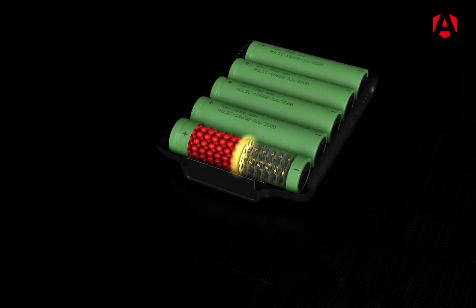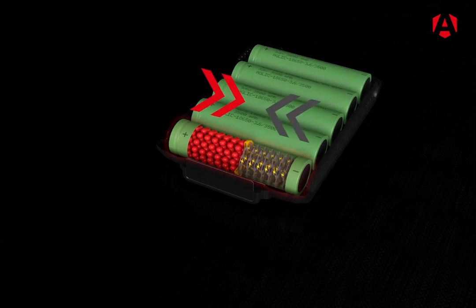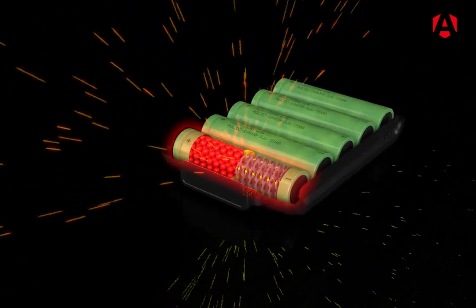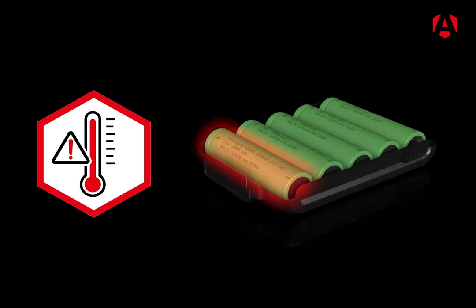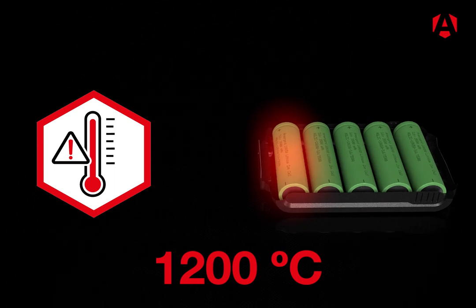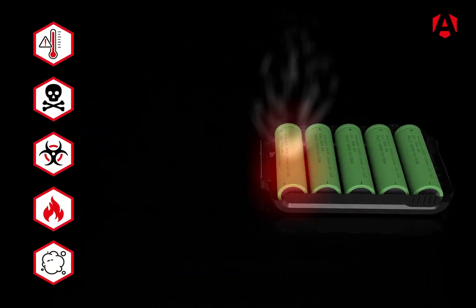When the cell membrane is damaged, the lithium and graphite will come into direct contact with each other, which causes a violent chemical reaction. This reaction produces a massive amount of heat and can reach temperatures of over 1,200 degrees Celsius in an event known as thermal runaway. Toxic and flammable gases are also produced in the reaction and are likely to ignite and explode.